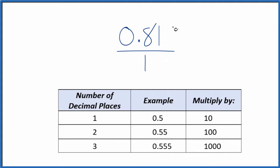We need to get this number 0.81 to be a whole number. And to do that we could just multiply it by 100. That's because we have two decimal places, 1, 2. We have two decimal places, we multiply by 100.